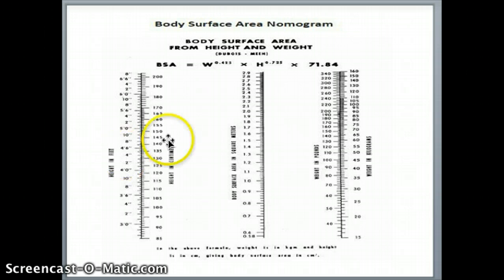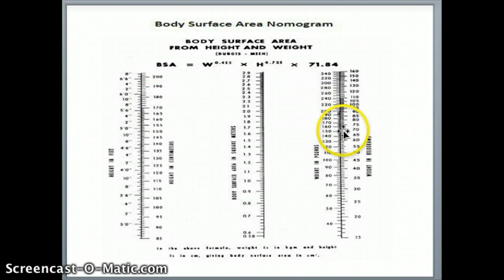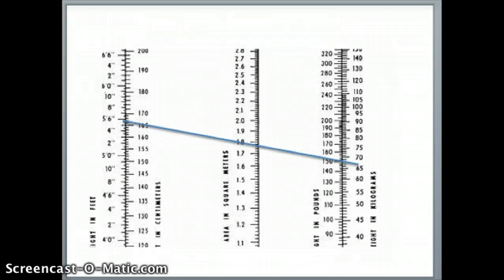Where is 5'6"? You'll notice it is right about here. 150 pounds is right about there. So we'll draw a line from 5'6" to 150. You would typically use a ruler or a straight edge. Here's the line that I've drawn — from 5'6" to 150 — and you'll see that it crosses somewhere between 1.7 and 1.8.